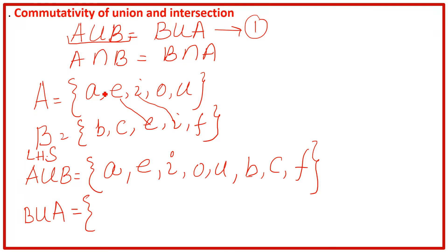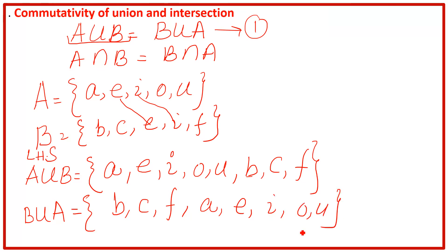For B union A, we start from B: B, C, F, then from A: A, E, I, O, U. So A union B gives {A, E, I, O, U, B, C, F} and B union A gives {B, C, F, A, E, I, O, U} — the same elements, just written in a different sequence. There is no rule on sequence, so we have proved that the left-hand side equals the right-hand side. The first part of commutativity is proved: A union B equals B union A.